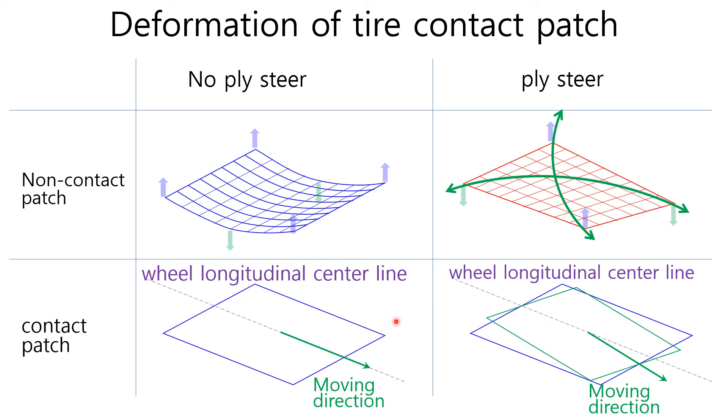Tire belts have flattened shape in the contact patch as it rolls on the road surface. For the no-ply steer tire, tire belt curvatures in the non-contact patch area are constant along every longitudinal and lateral plane. Therefore, moving direction of tire coincide with that of the tire longitudinal center line in the tire contact patch like this manner.